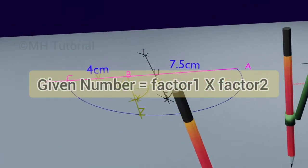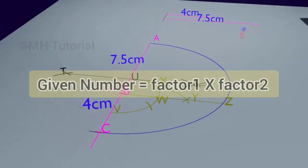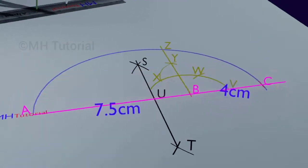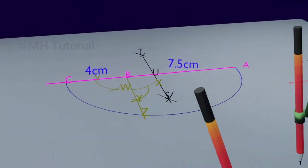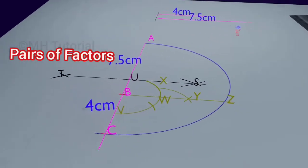However, one thing should be kept in mind while factorizing the given number: the difference between these two factors must be kept as low as possible.